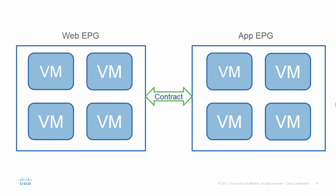Now by default within ACI, we allow the VMs or endpoints — it could be bare metal as well — to communicate within those EPGs. Of course they can't communicate with each other across EPGs unless we have that contract, but within that EPG they can communicate by default at any time.